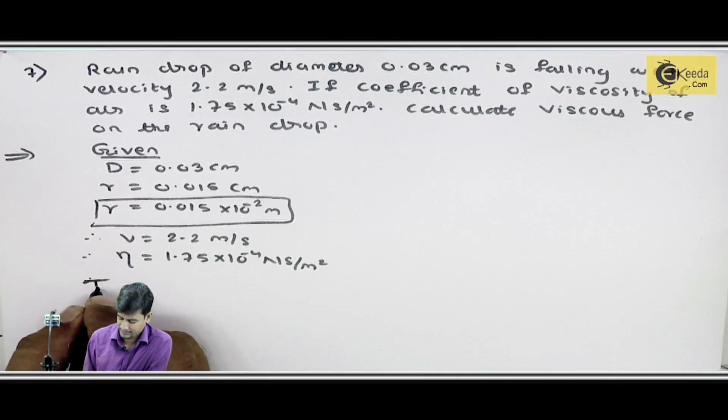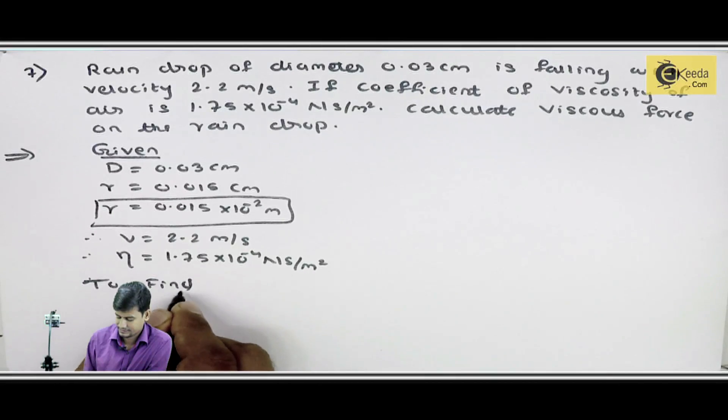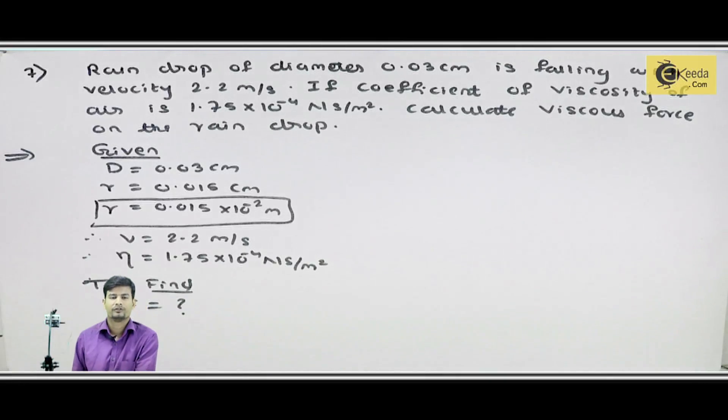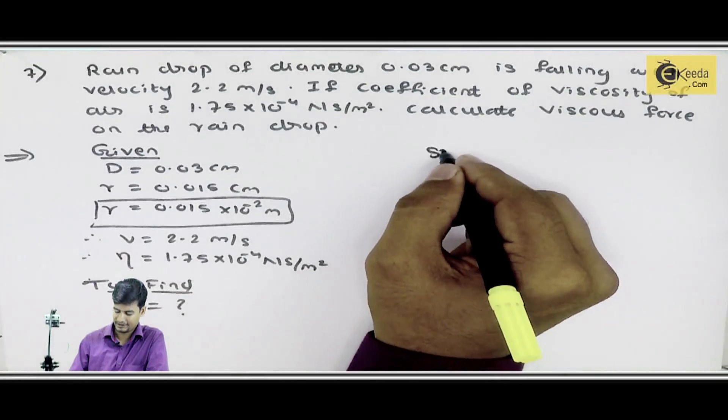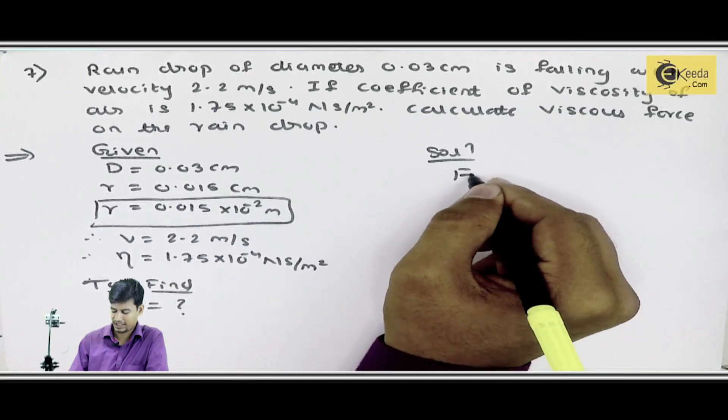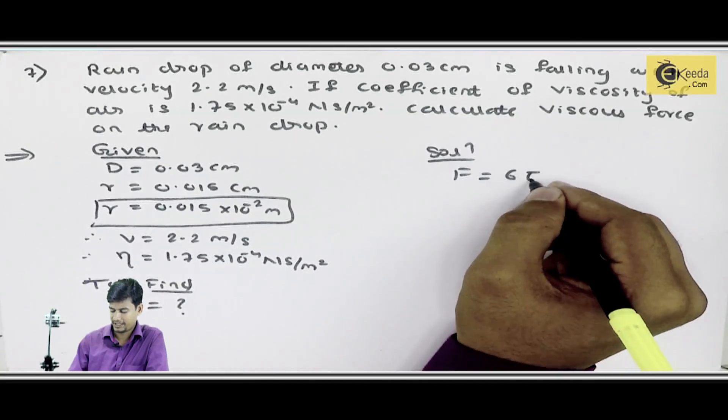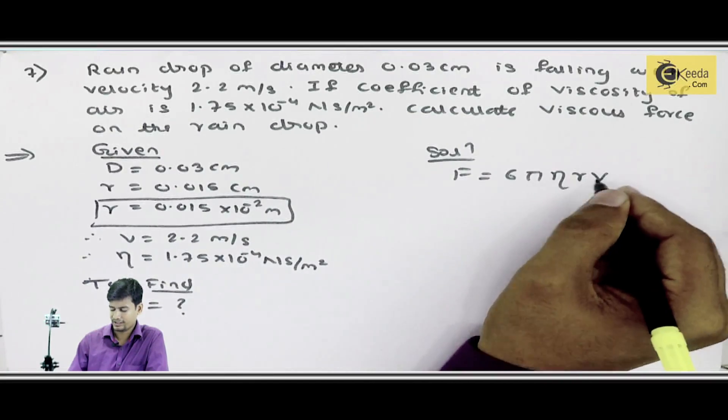And find out kya karna hai mujhe. To find viscous force. Viscous force find karna hai. Eta diya hai, radius diya hai and v diya hai. So simple, hummare paas formula hai. Hummara formula hai, viscous force ka f equals to 6 pi eta r into v.